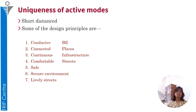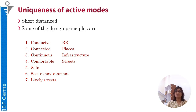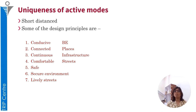Active modes are different from modeling the mechanized modes. Essentially, active modes involve the shortest distance trips. For mechanized modes, variables such as monetary cost and travel time might be considered. But in the case of active modes, one needs to consider 7 key principles: building a conducive built environment, building and developing connected places, having continuous infrastructure, provisioning comfortable and safe streets, and building a secure environment with lively streets. These 7 key principles also become part of modeling active modes, which makes it different from modeling a mechanized mode.